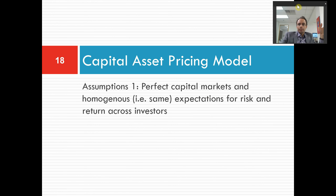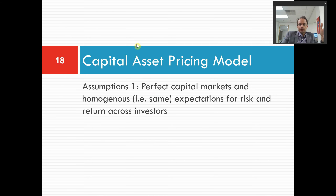Welcome back to another presentation on the capital asset pricing model. In this presentation we're going to move on from the discussion of diversifiable versus non-diversifiable risk from the prior presentation, towards an equation which we can use to estimate discount rates called the capital asset pricing model. The equation says that the expected return on any asset — that is the discount rate — is equal to two parts: the risk-free rate of interest plus a premium for bearing systematic risk.